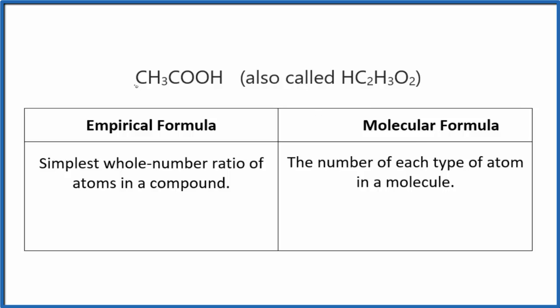Let's do that first. So we have two carbons, C2. For hydrogens, we have this three here and then this one, so we have four hydrogens. And then we have two oxygens. So this is the molecular formula for acetic acid.